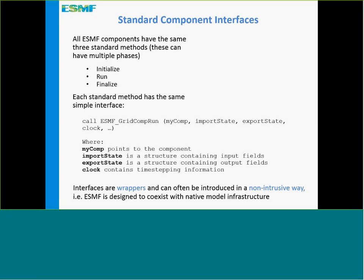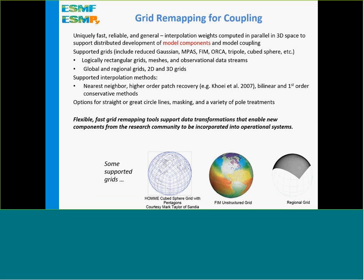We can wrap it around a component like MOM5 or MOM6 that uses a different infrastructure package without needing to remove that other package. ESMF offers grid remapping for coupling. These flexible and fast remapping tools support data transformations that enable new components from the research community to be incorporated into operational systems. If there's interest in different dynamical cores — like MPAS, FEM, or various ocean grids — this enables you to couple them into the system by doing grid transformations that other components can understand.